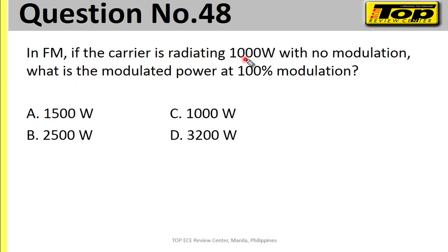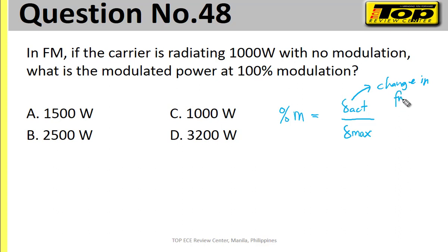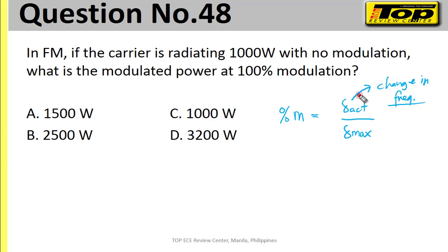Number 48. In FM, if the carrier is radiating 1000 watts with no modulation, what is the modulated power at 100% modulation? Percent modulation in FM is the actual deviation over the maximum deviation. When we talk about deviation, this is change in frequency. When frequency changes, does power change? Of course not. So with modulation or no modulation, the carrier power will be the same — still 1000 watts even at 100% modulation.